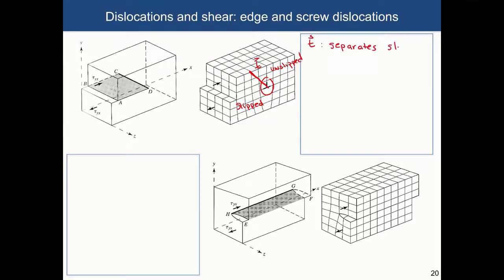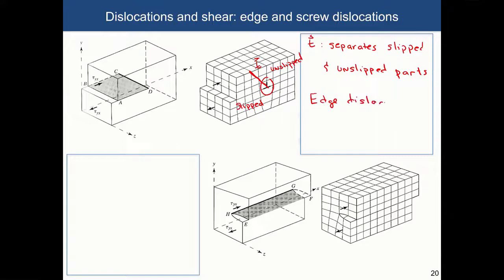For an edge dislocation, the shear stress that is applied is perpendicular to the dislocation line, or the tangent vector. What that means is that you apply shear stress to the material in one direction, and the dislocation line runs perpendicular to that. In this particular case of an edge dislocation, the tangent line would run within the crystal perpendicular to the applied shear stress.